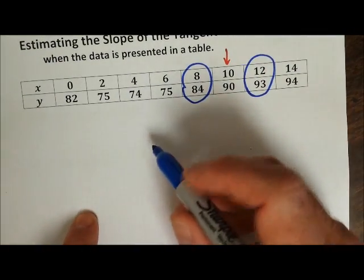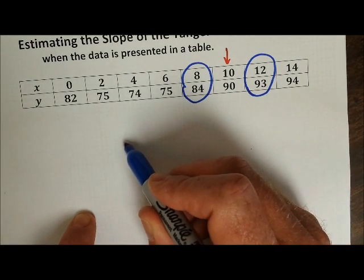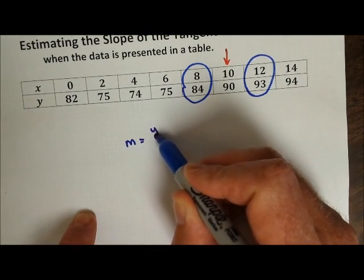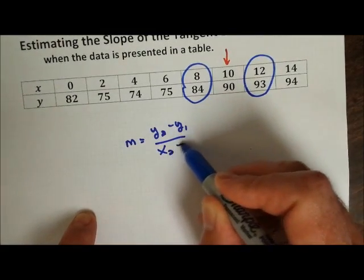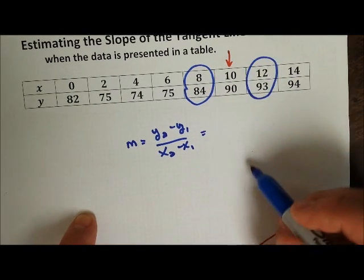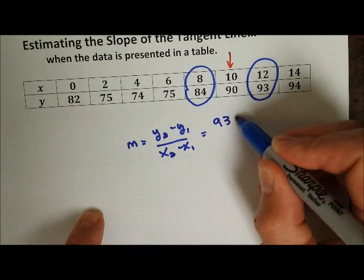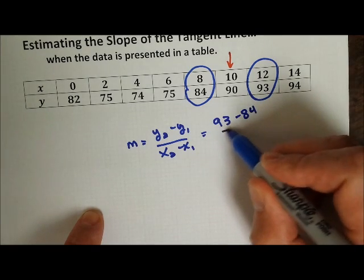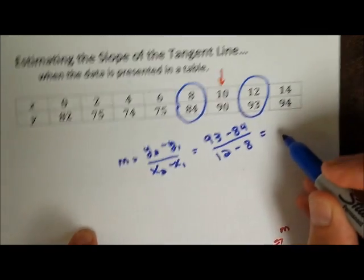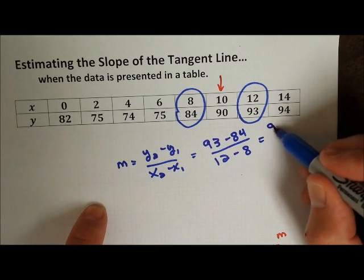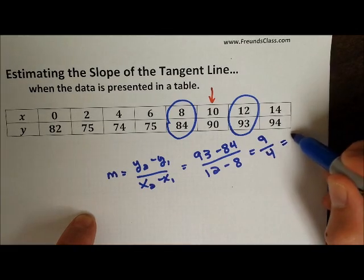We know slope is the change in y over the change in x. As a formula, that's y2 minus y1 over x2 minus x1, which in this case will be 93 minus 84 over 12 minus 8, which gives us 9 divided by 4, which is 2.25.